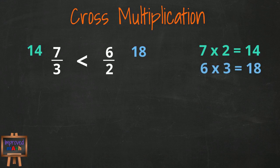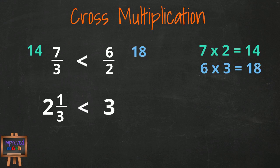We can validate that because we know that 7 thirds is actually the same thing as saying 2 and 1 thirds. If you convert it to a mixed number, and 6 halves is the same thing as 3 wholes, 3 is greater than 2 and 1 thirds.